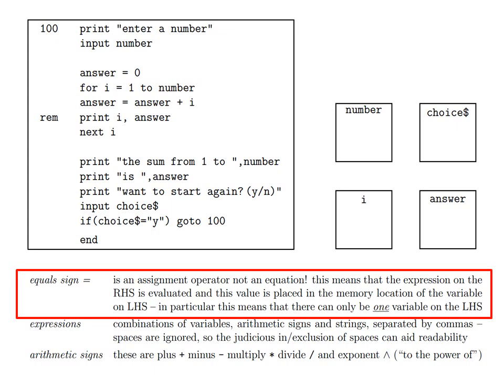Next, there is the equals sign. This is an assignment operator, not an equation. This means that the expression on the right hand side is evaluated, and this value is placed in the memory location of the variable on the left hand side. In particular, this means that there can only be one variable on the left hand side.